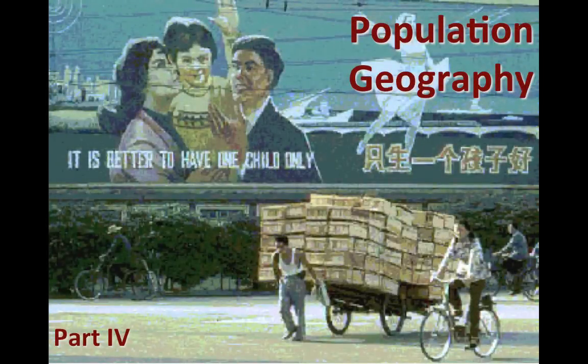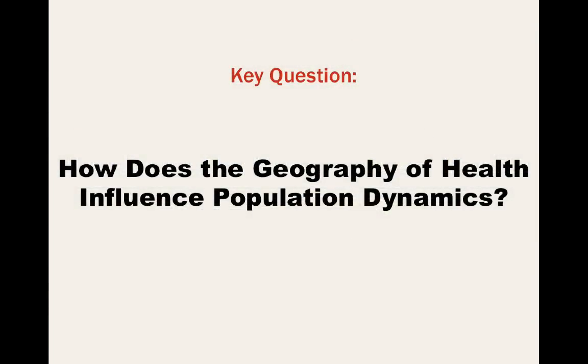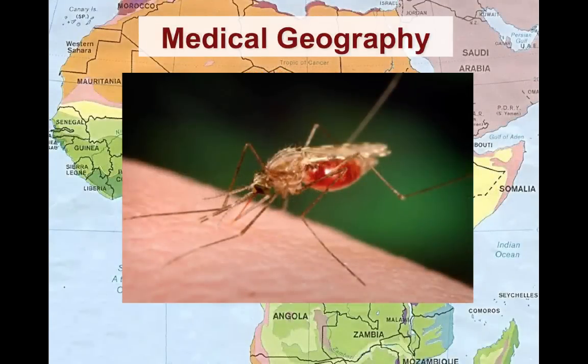Welcome to Population Geography Part 4. We're going to start off looking at Medical Geography, which is the study of health and disease from the geographical perspective.